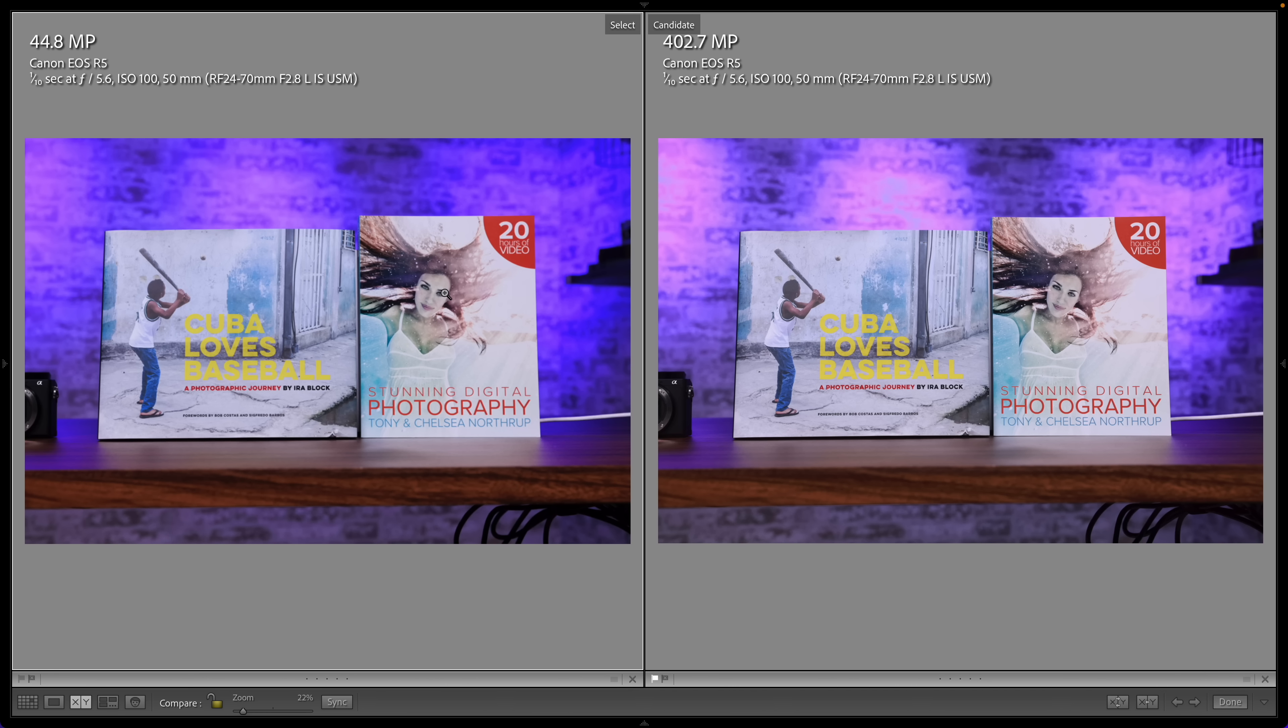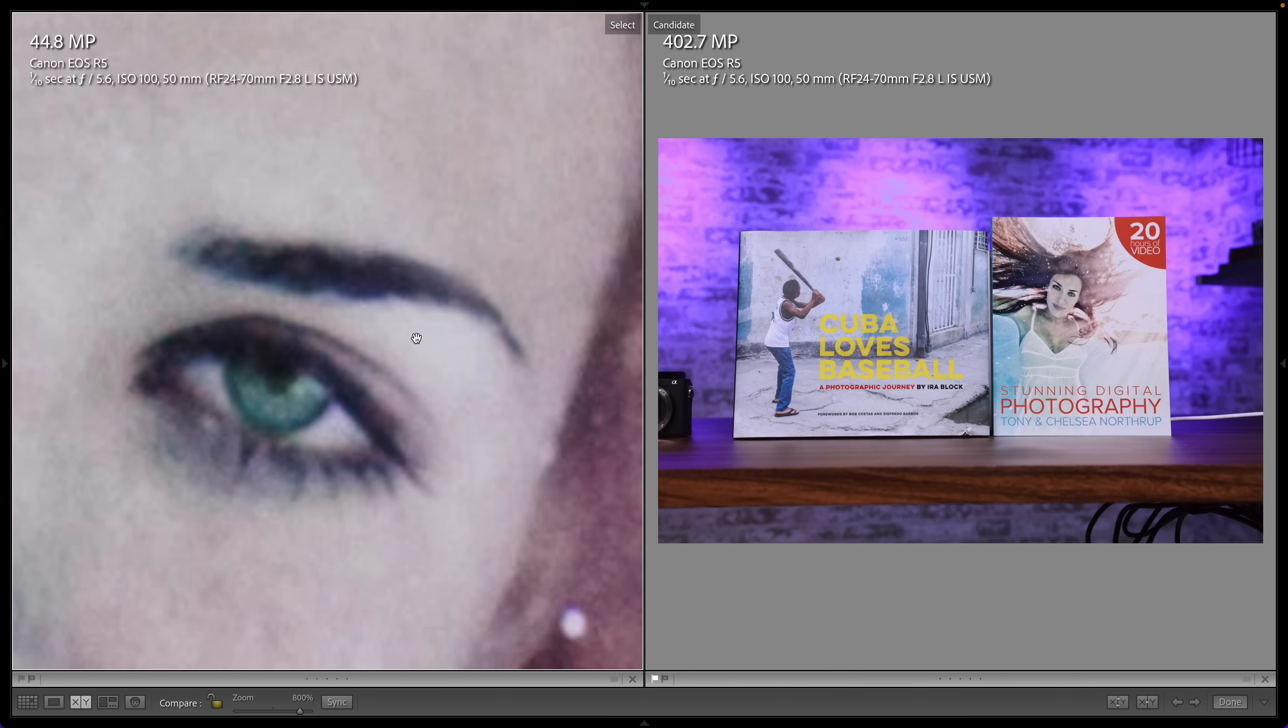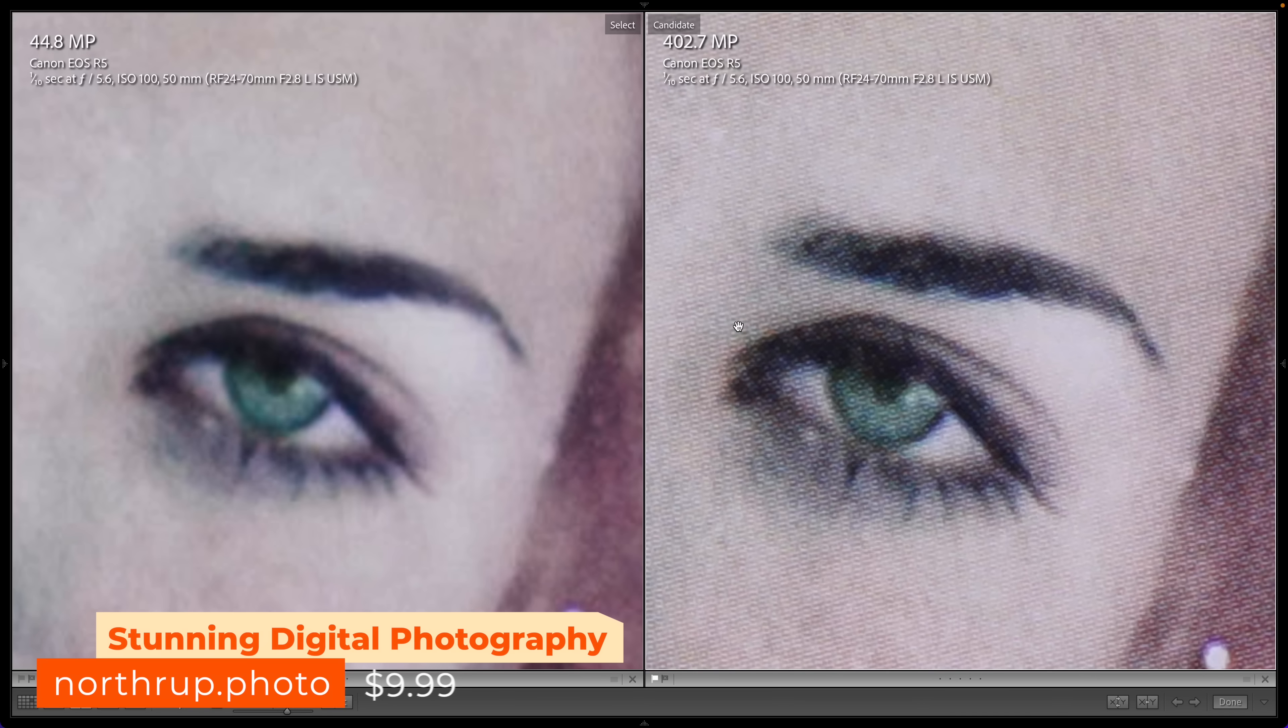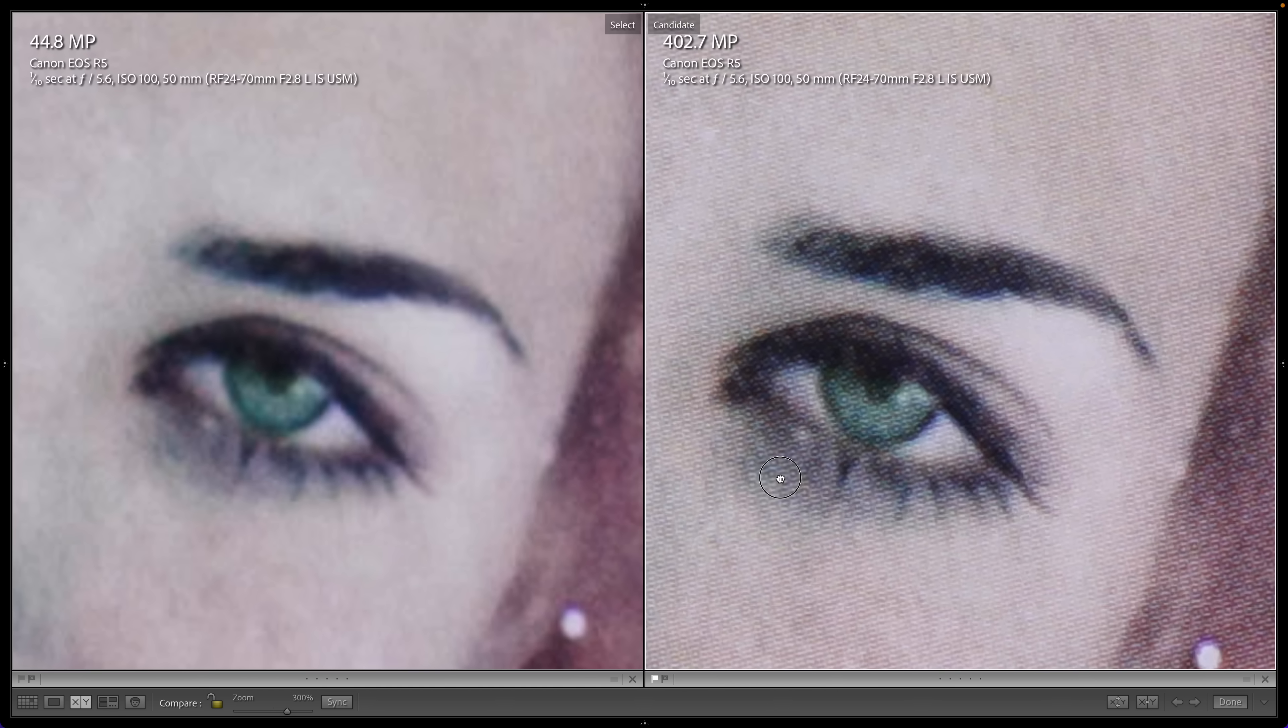On the left 45 megapixel Canon R5 RAW file and on the right a 400 megapixel Canon R5 IBIS high-resolution shot. In the 45 megapixel file we see a very sharp rendering of Chelsea's eye on the cover of our award-winning photography book and on the right you see the texture of the printing process.